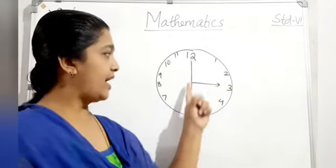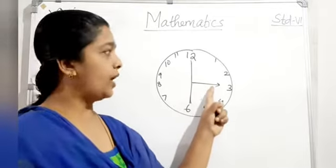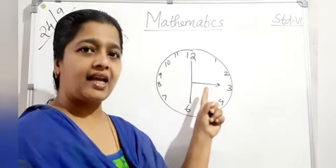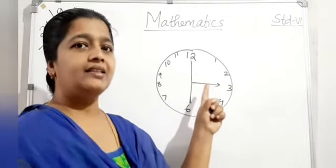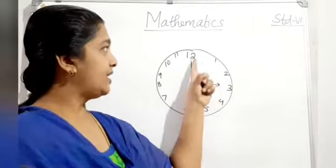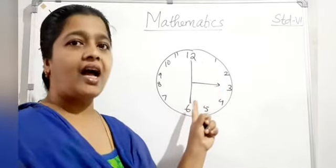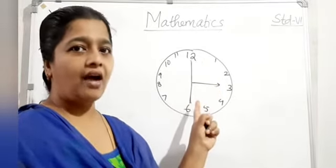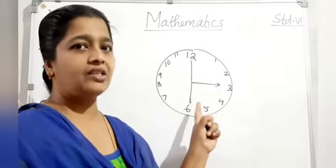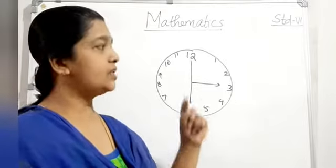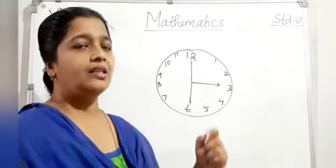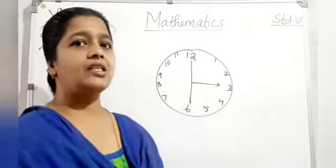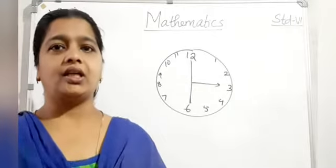This angle is 1/4th revolution, known as a right angle. A straight angle is half a revolution. From 12 to 12 is one full revolution.